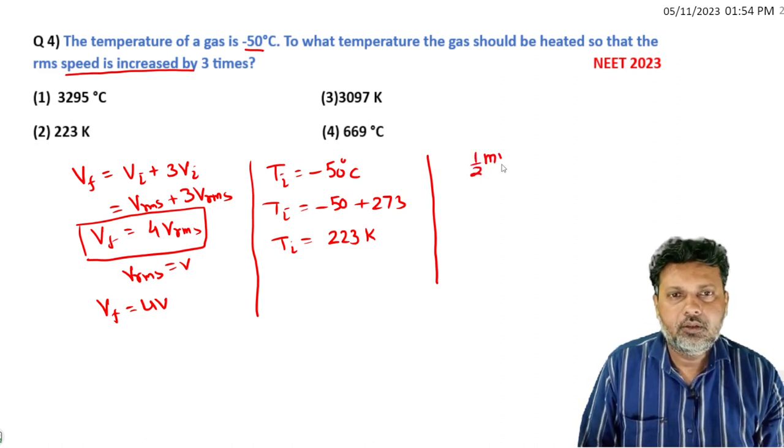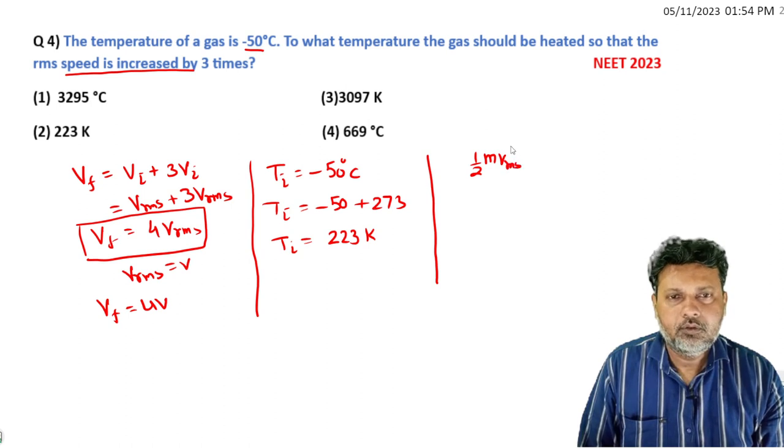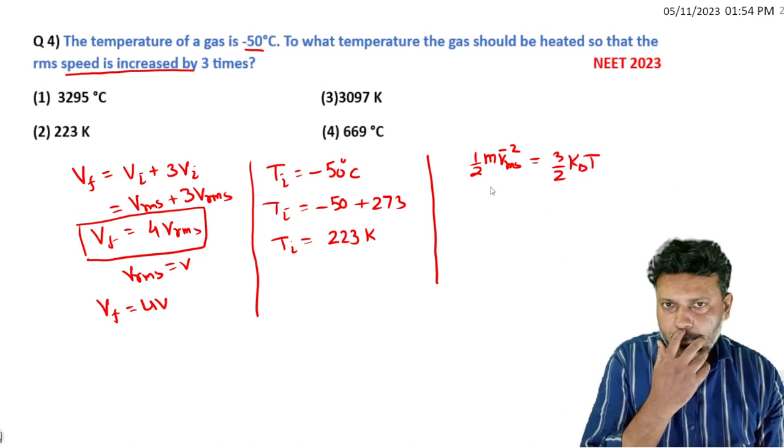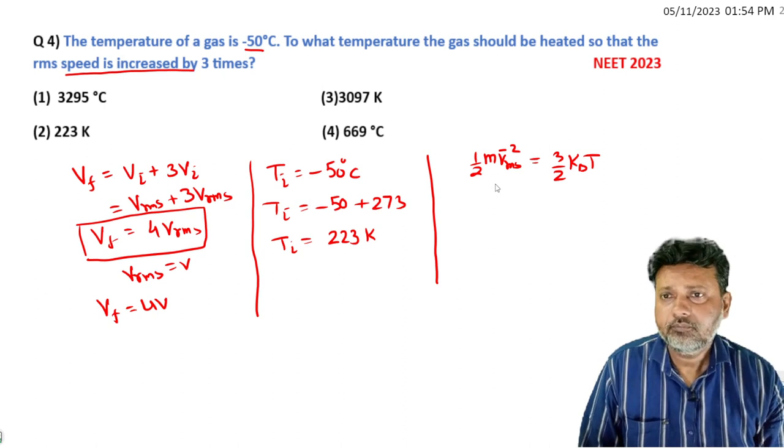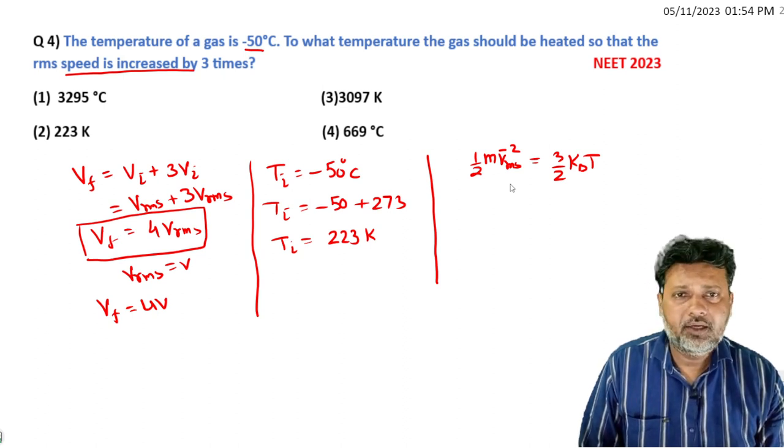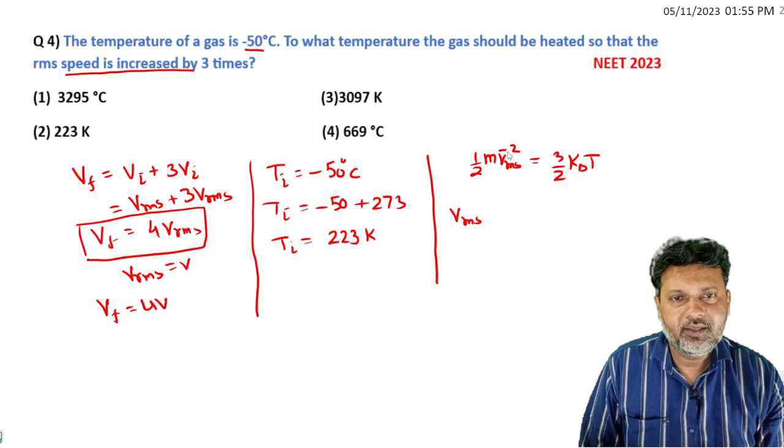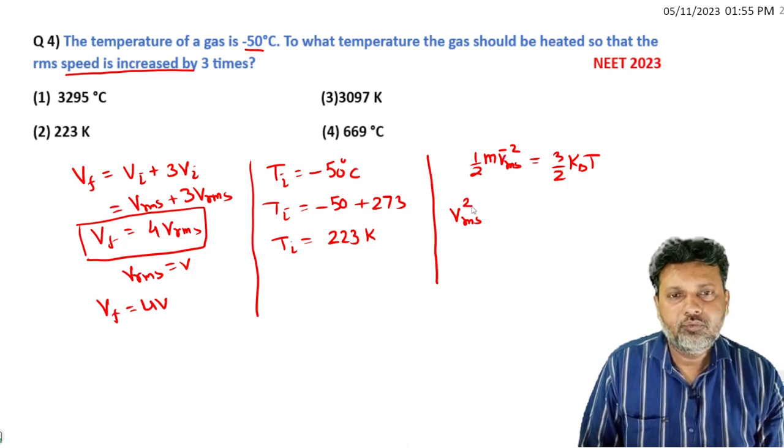We know that average kinetic energy is 3/2 kT. The average kinetic energy of molecules is 3/2 kT, which is also equal to 1/2 m V_RMS squared.